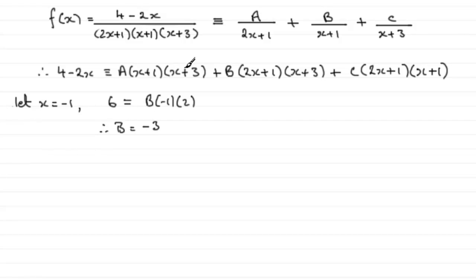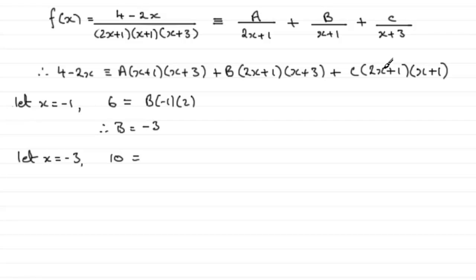Next, choosing x = -3 eliminates the C bracket. Substituting: 4 minus 2(-3) = 4 + 6 = 10. The A term drops out since (-3+1) makes that bracket 0, and the B term also drops out. For C: 2(-3)+1 = -5 and (-3+1) = -2, so 10 = C times (-5)(-2) = 10C. Dividing both sides by 10 gives C = 1.